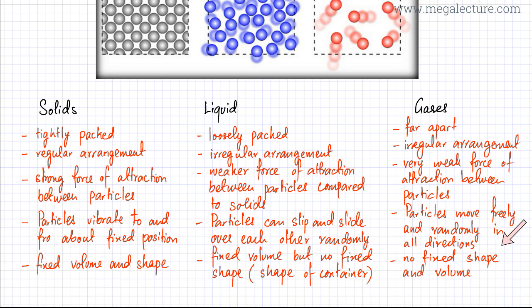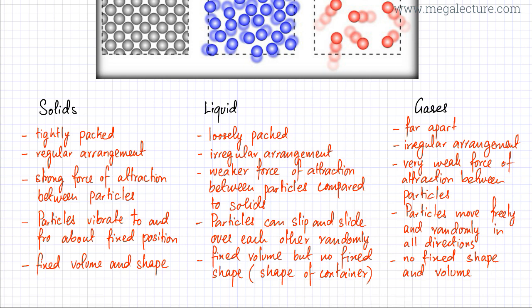Gases don't have any fixed shape or any fixed volume — both the shape and the volume would be that of the container. Gases can expand, they can compress, and they can fill up any volume you put them into. If you release some gas in a room, the gas would spread out and occupy the entire room. If you put gas molecules in a container, the gas would spread out and occupy the entire container. Gases have this ability to expand and can be compressed because the particles are far apart with many spaces between them, so gas particles can come together when compressed, and vice versa they can expand as well.